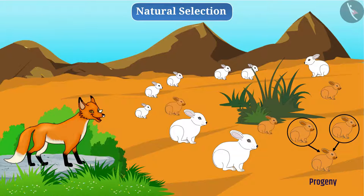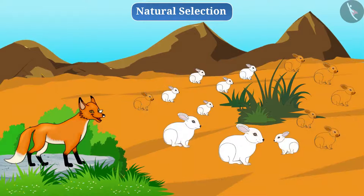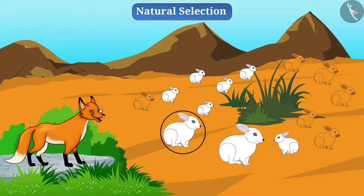The number of white rabbits is higher than the number of brown rabbits, so white colour is a common feature in this situation. The colour of the soil of the hill is brown. The fox can easily see white rabbits on brown soil, while brown rabbits cannot be easily seen. Hence, the fox hunts more white rabbits than brown rabbits.